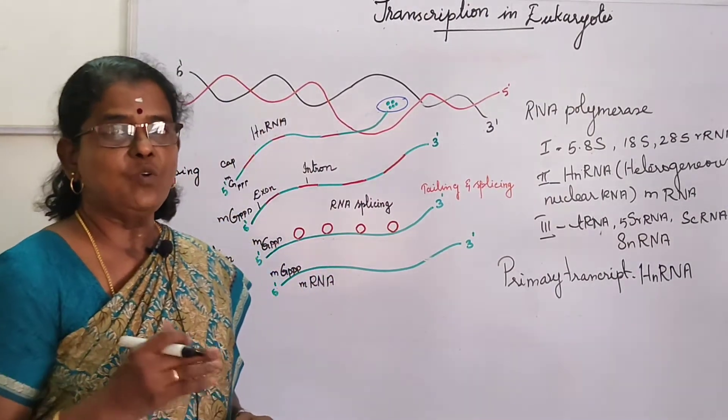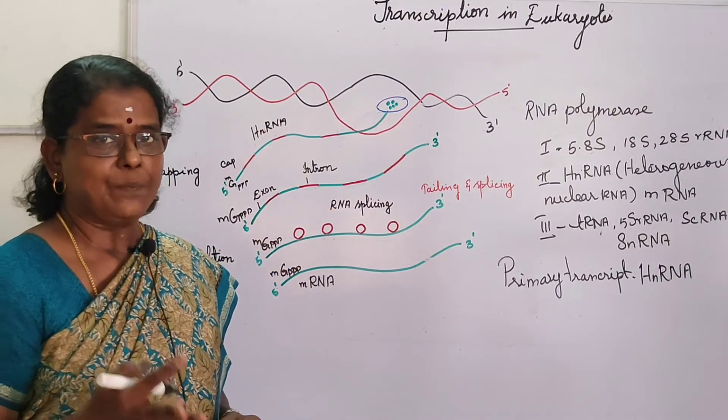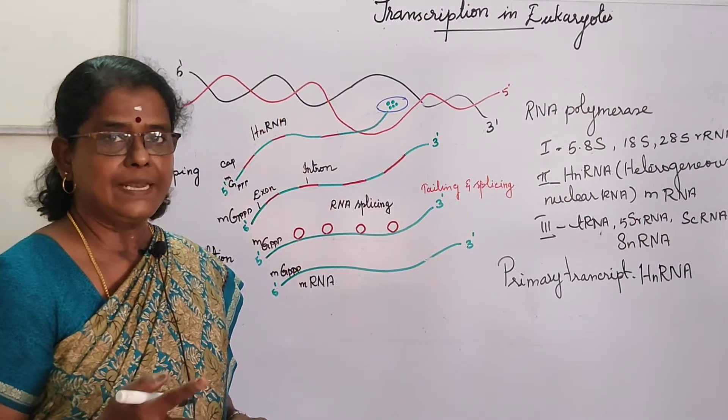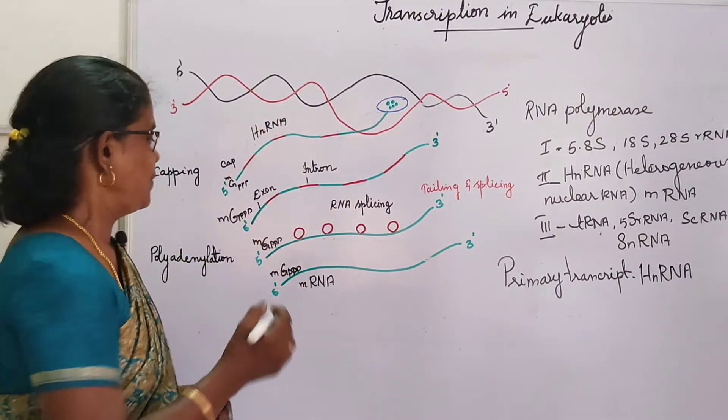This primary transcript is converted into functional mRNA after the post-transcriptional process. It involves three steps: capping, tailing, and splicing.